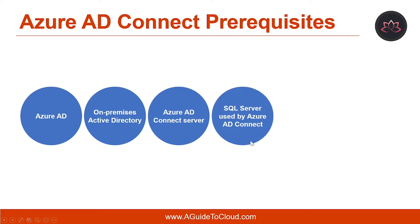Another requirement is the SQL Server used by Azure AD Connect. Azure AD Connect requires an SQL Server database to store identity data. By default, an SQL Server 2012 Express Local DB is installed. SQL Server Express has a 10 GB size limit that enables you to manage approximately 100,000 objects. If you need to manage a higher volume of directory objects, you need to point the installation wizard to a different installation of SQL Server.